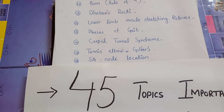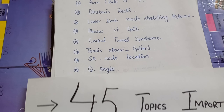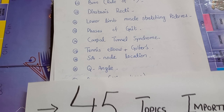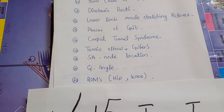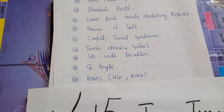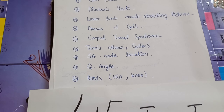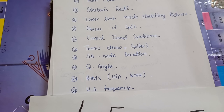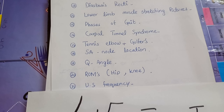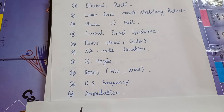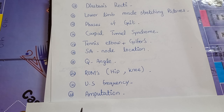Number eighteen is SA node location. Number nineteen is Q angle. Number twenty is range of motion of hip and knee, which are important. Ultrasound frequency and amputation are also covered, along with best modality for wound care and coupling media for ultrasound.